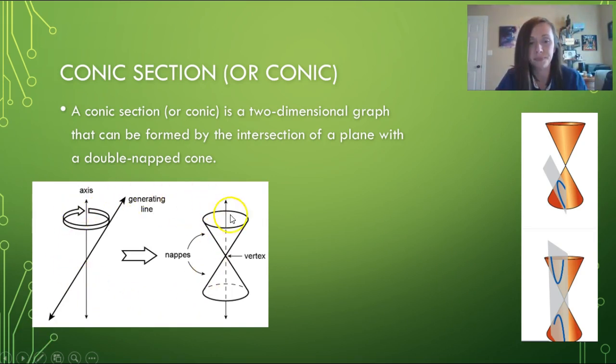Over here in this diagram it shows how a double-napped cone is formed. First you begin with a vertical axis and a generating line that is tilted at some angle other than the undefined slope.